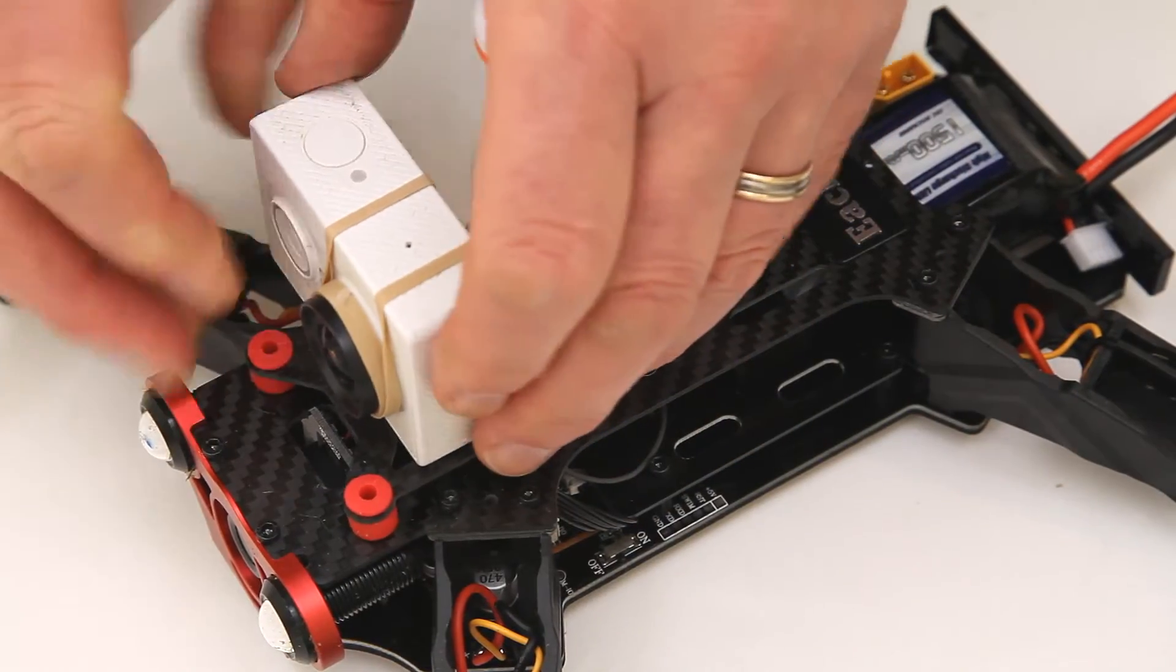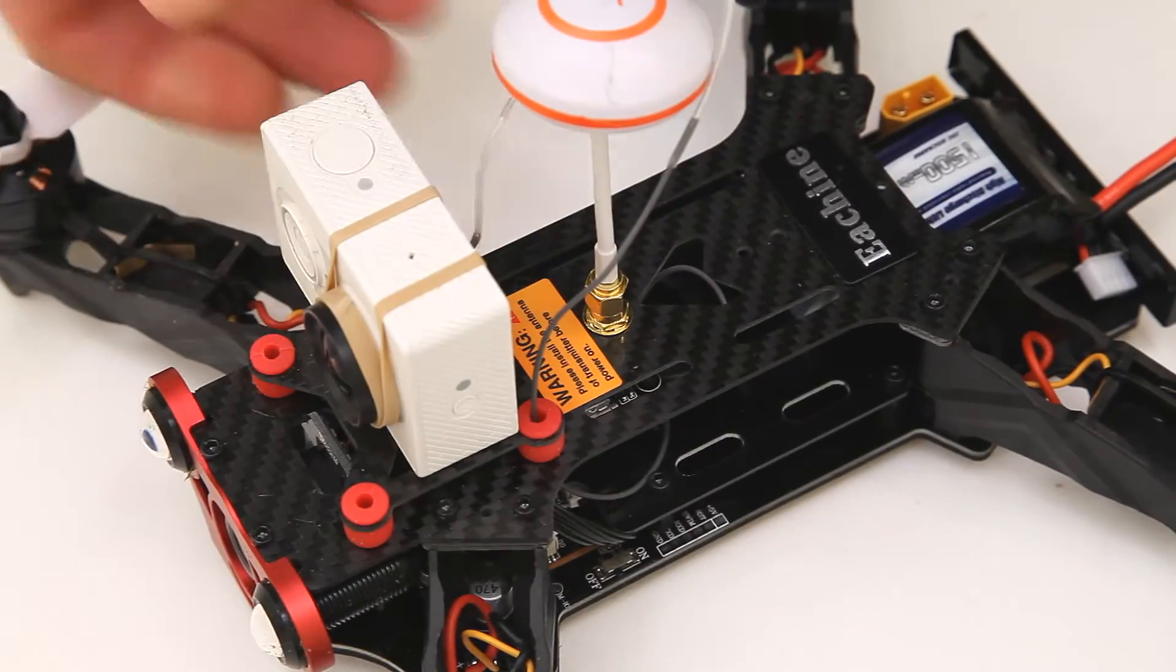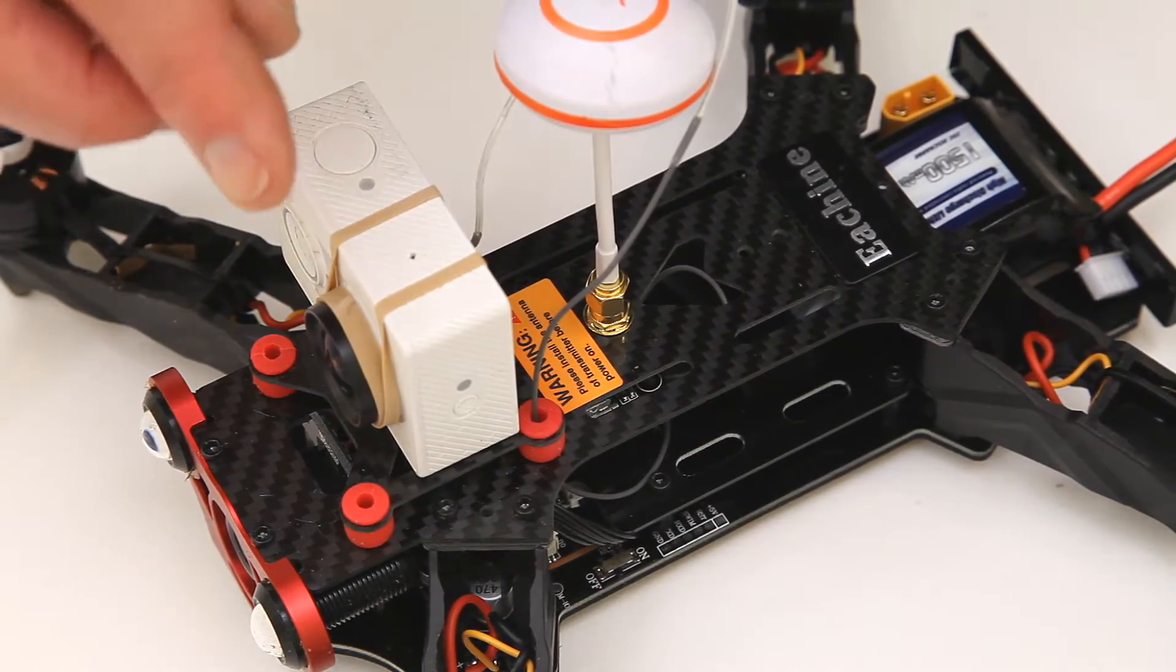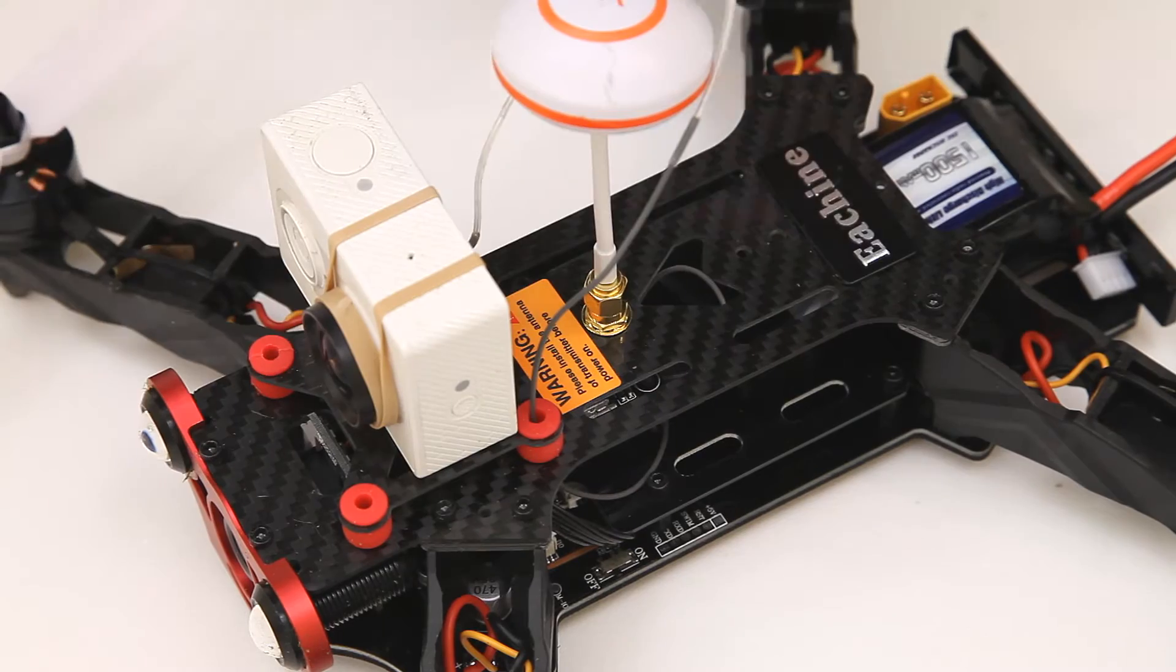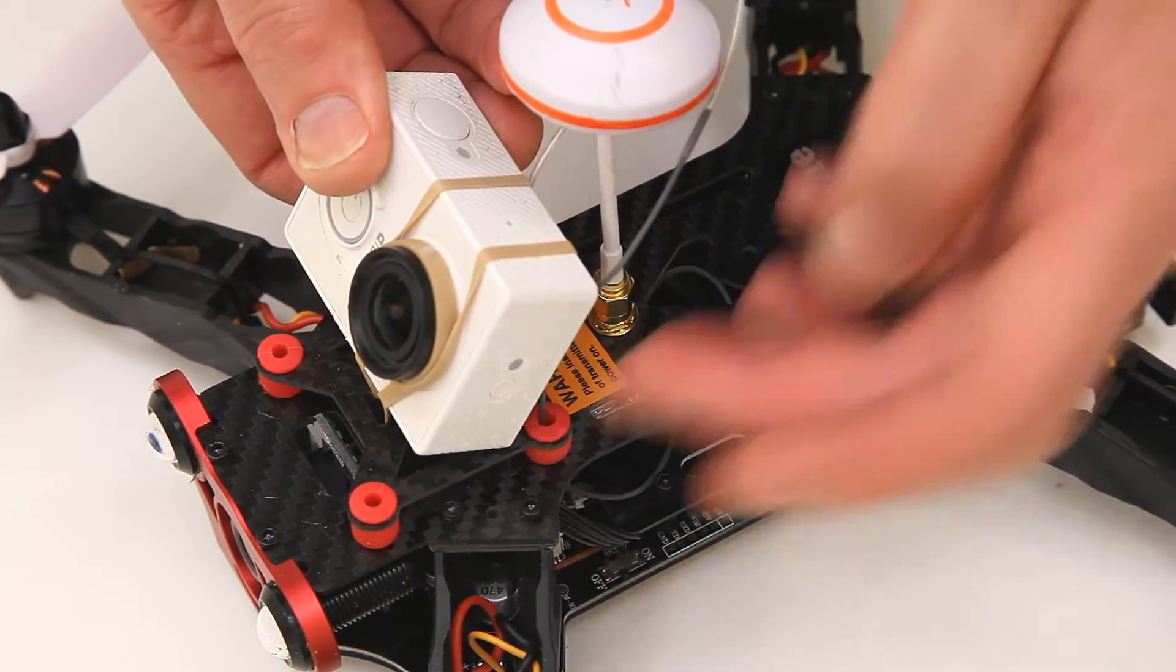That's as complicated as I like to get with mounting things. It works, it's absolutely superb, and the nice thing about using an elastic band is if the quad takes a really bad hit or the camera takes a hit, it's got a chance to get out of the way.